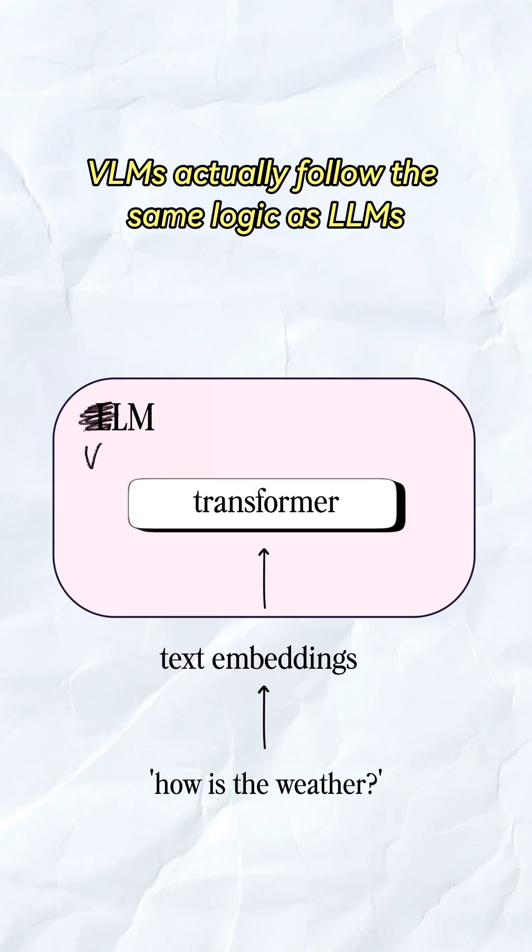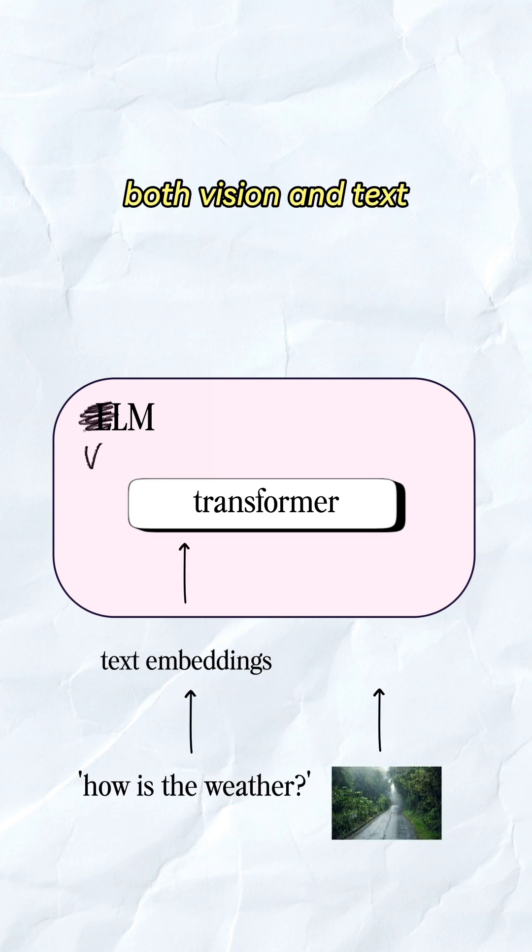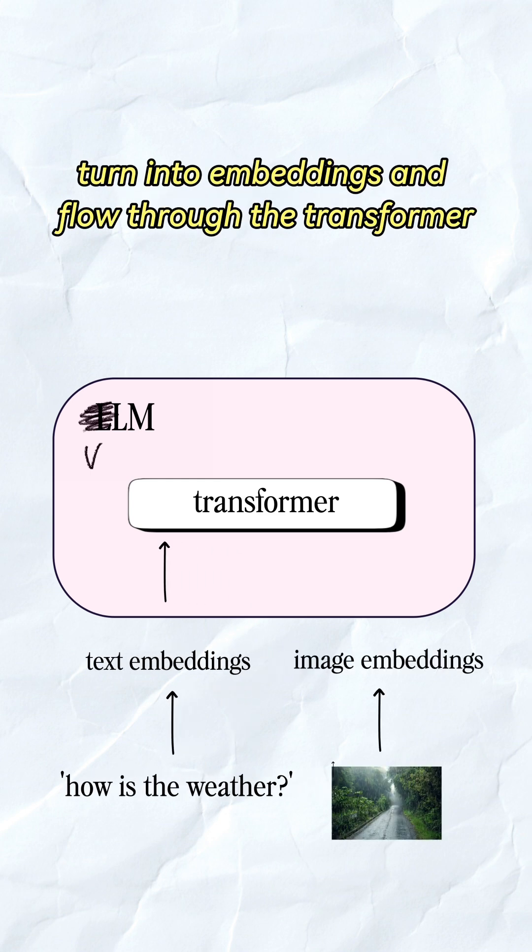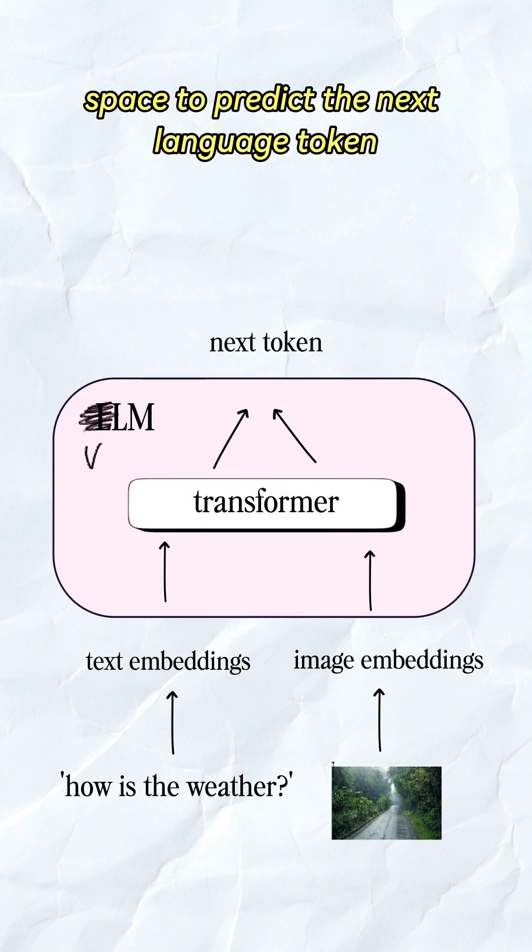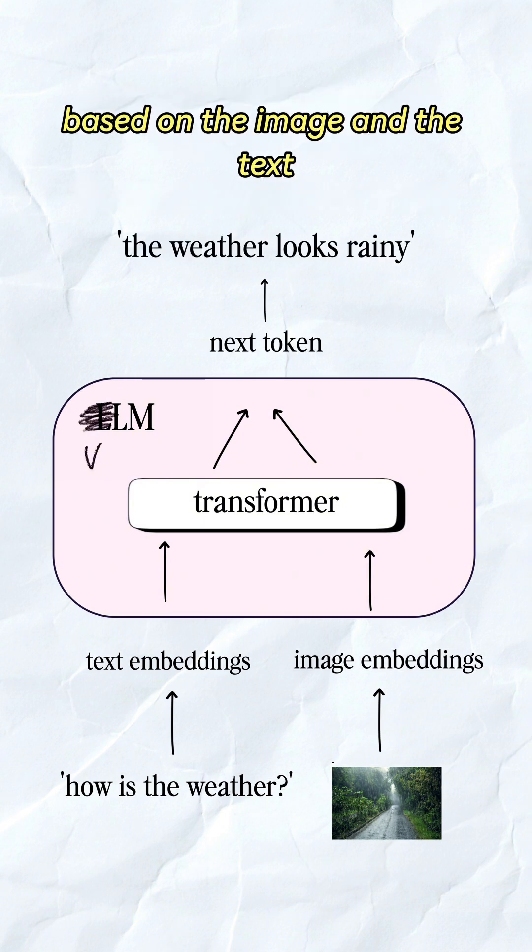VLMs actually follow the same logic as LLMs. Both vision and text turn into embeddings and flow through the transformer. The model uses this shared space to predict the next language token based on the image and the text.